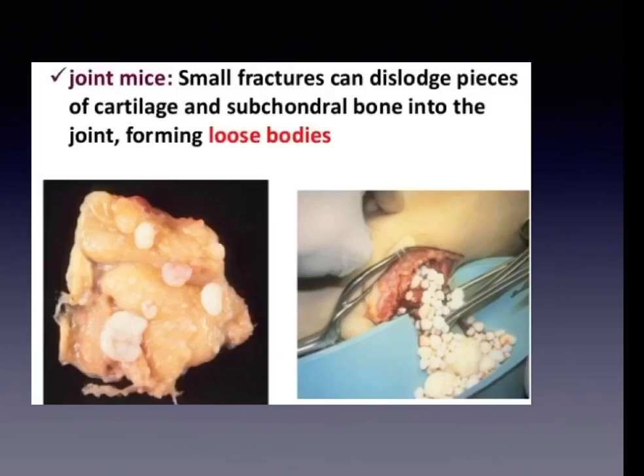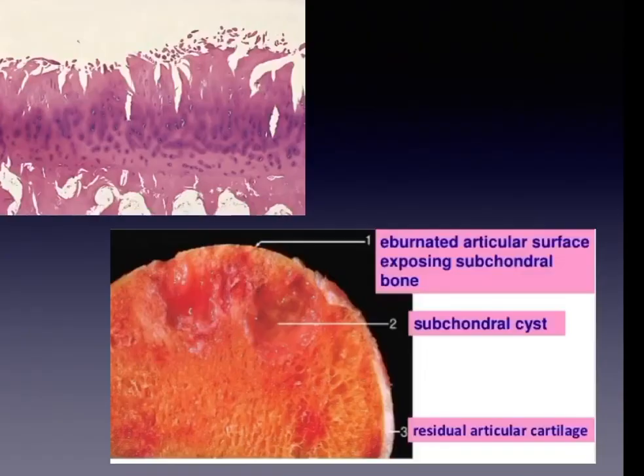This slide shows loose bodies — dislodged pieces of cartilage and subchondral bone in the joint spaces. Another image shows changes in the articular surface in osteoarthritis: there is eburnated articular surface exposing the subchondral bone, presence of subchondral cysts, and histologically, fibrillation of the articular cartilage is visible.